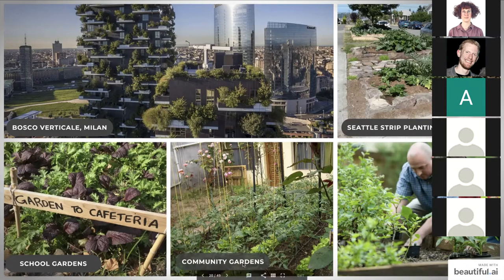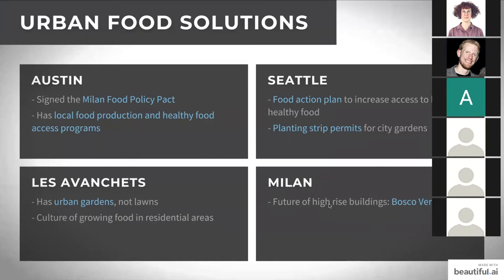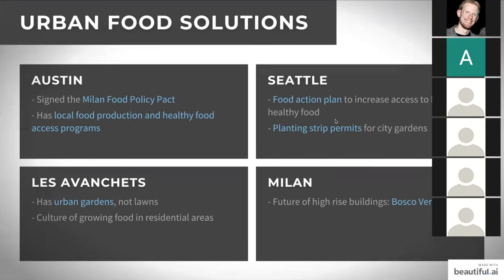School gardens are becoming more common and are an effective way to teach children how to eat healthy and grow food — a perfect starting point for changing the food system. Community gardens are excellent solutions for low-income and general communities. Austin has programs promoting healthy food and policies; Seattle has a food action plan. A city in Switzerland maintains a victory garden culture where most residents have front and backyard gardens with community food-sharing systems.